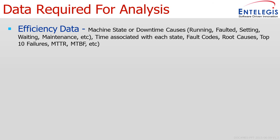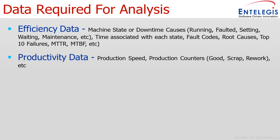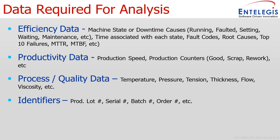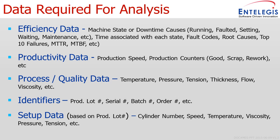To do all this reporting and analysis, we need some data. For efficiency data, we need to determine downtime across all lines and processes — identifying what types of downtime are happening at any given time and their durations. For productivity data, we need to capture speeds and counters: how many good parts, scrap, rework, etc. Quality data is derived from process parameters such as temperature, pressure, tension, and thickness. We attach identifiers — lot numbers, work orders, serial numbers, and batch numbers — to associate all this data. Setup data includes the min/max tolerances and specifications for all areas of the production line.